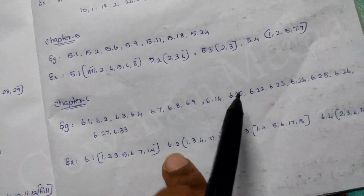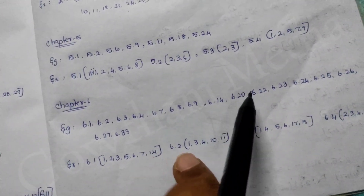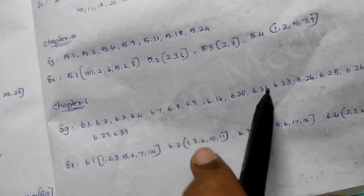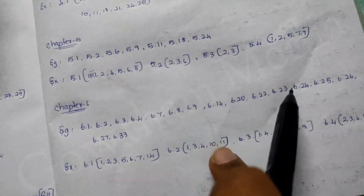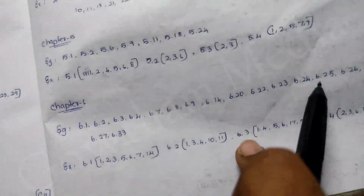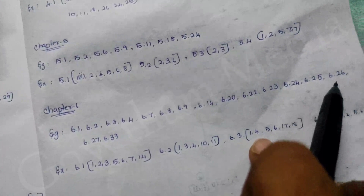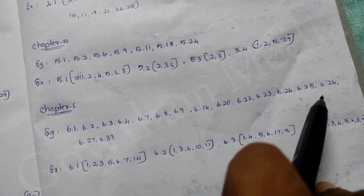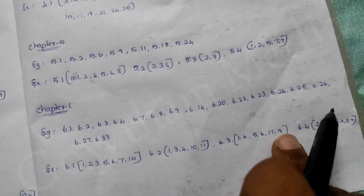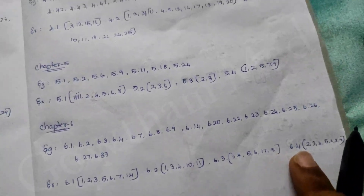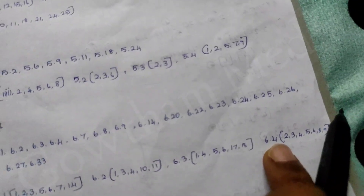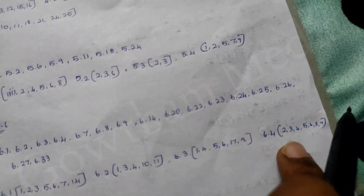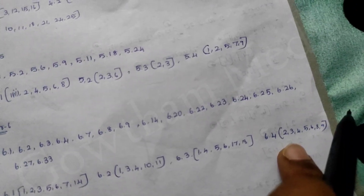6.2 — 1st sum, 3rd, 4th, 11th. 6.3 — 1st sum, 4th, 6th, 17th, 18th. 6.4 — 2nd, 3rd, 4th, 5th, 6th, 8th, 9th.